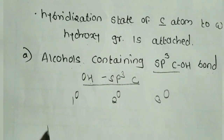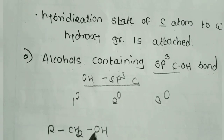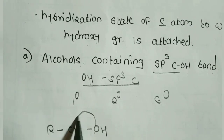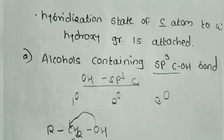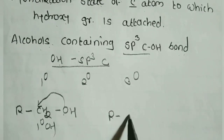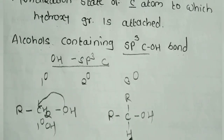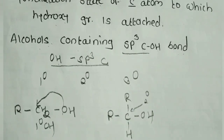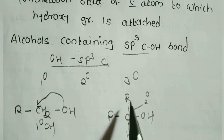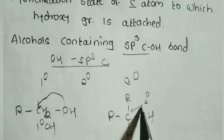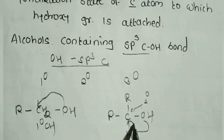For example: in primary alcohol (R–CH2–OH), the OH group is attached to an SP3 hybridized primary carbon. In secondary alcohol (R–CH(OH)–R), the OH is attached to an SP3 hybridized secondary carbon, because two hydrogen atoms are replaced by two alkyl groups, making it a secondary carbon.